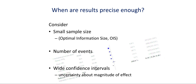Very low quality evidence expresses that the true effect is likely to be substantially different from the estimate obtained from the research evidence. So when are results precise enough? There are three general criteria to consider: first, sample size — a larger sample size is more likely to yield precise enough results, determined using the concept of optimal information size or OIS; second, the number of events, which is an extremely important contributor; and third, the width of the confidence intervals, which express the uncertainty about the magnitude of the effect.